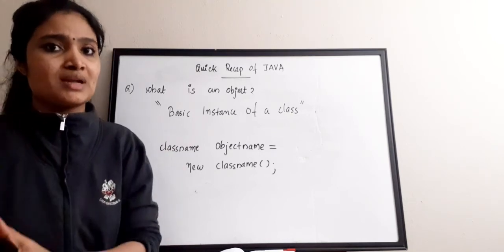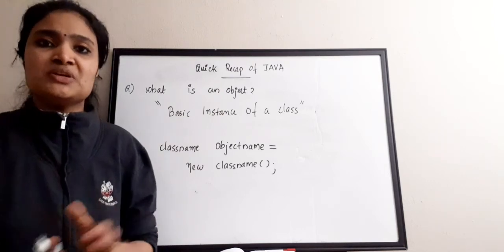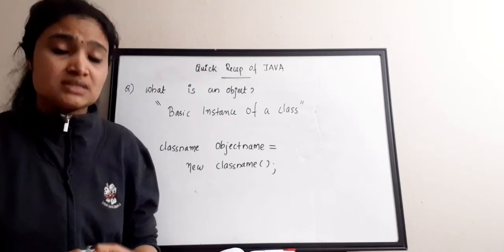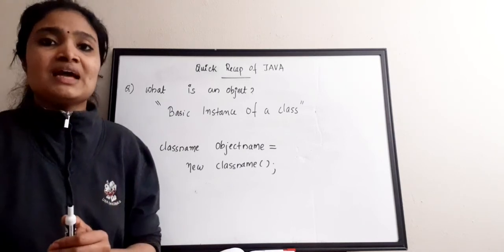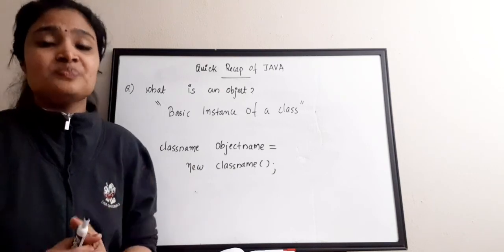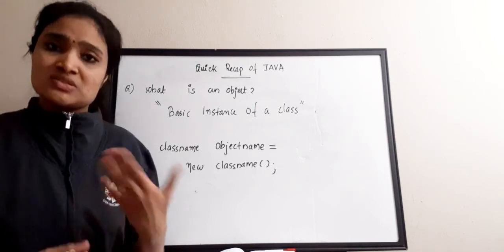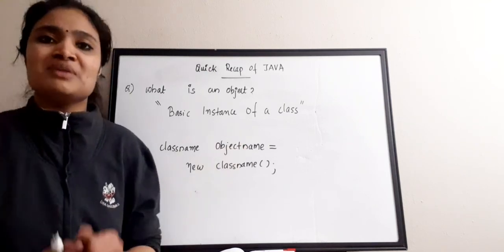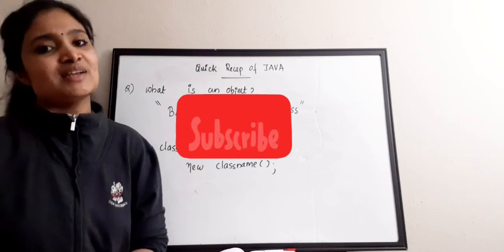That is why Java is called an object-oriented programming language. In this video we discussed very basic concepts: what is Java, the various categories of programming languages, what is a Java compiler, what are IDEs, and the concepts of classes and objects. In the next part, we'll be discussing object-oriented programming concepts. If you're interested, please stay tuned to the channel. If you found the video useful, give it a thumbs up, share it with friends, and subscribe. Thanks for watching!